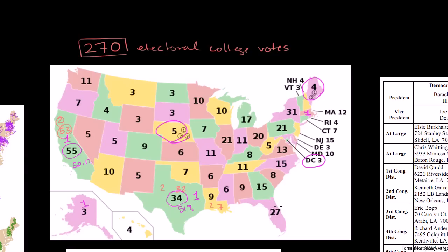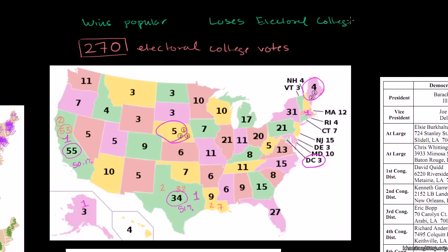You might already sense that this winner-take-all system might lead to some distortions. The biggest distortion is you can imagine a candidate who wins the popular vote but loses the electoral college. The way to think about it is: imagine someone who gets huge majorities in the states they win.